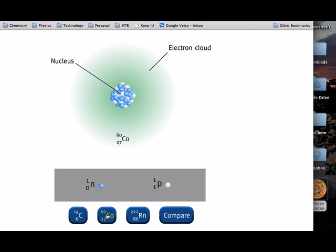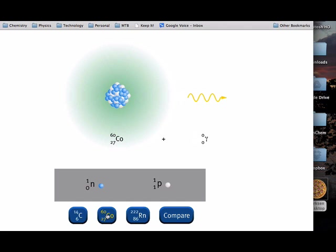A cobalt-60 nucleus contains 27 protons and 33 neutrons. When a gamma ray is emitted, the number of protons and neutrons in the nucleus is unchanged. The half-life for this process is 5.26 years, meaning that half of a given sample will undergo this process every 5.26 years.